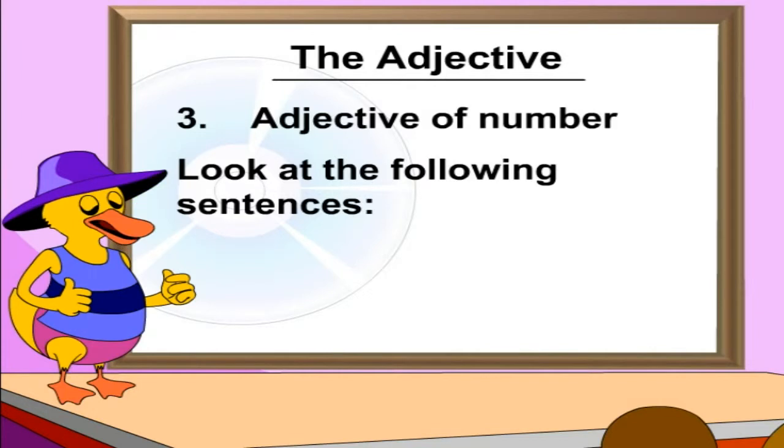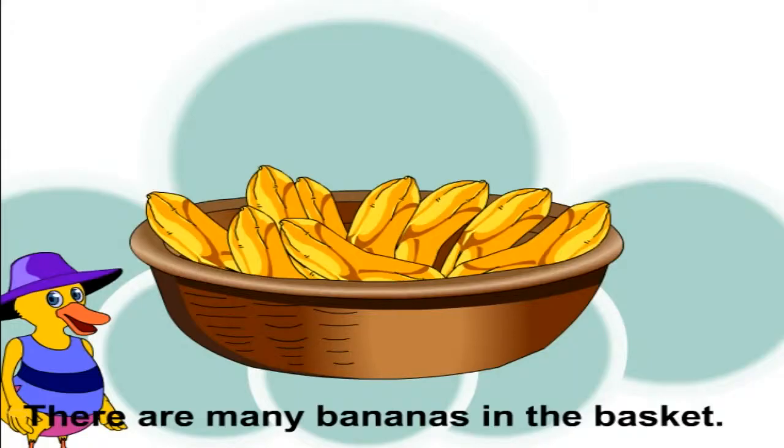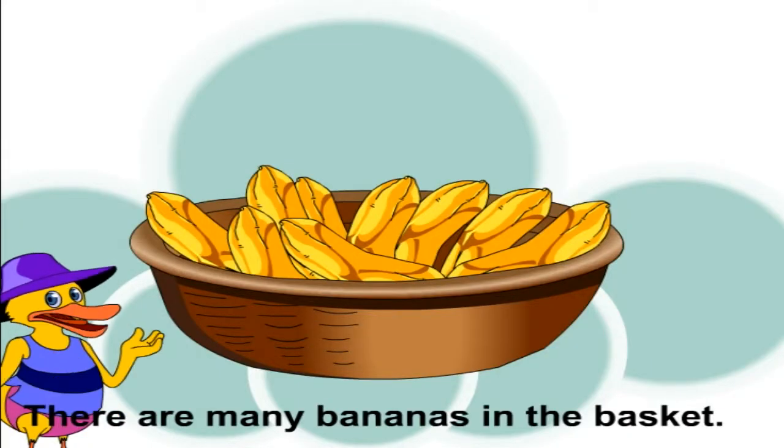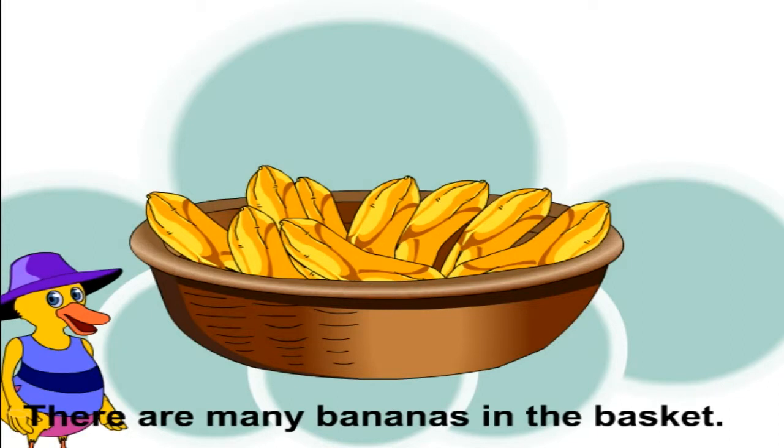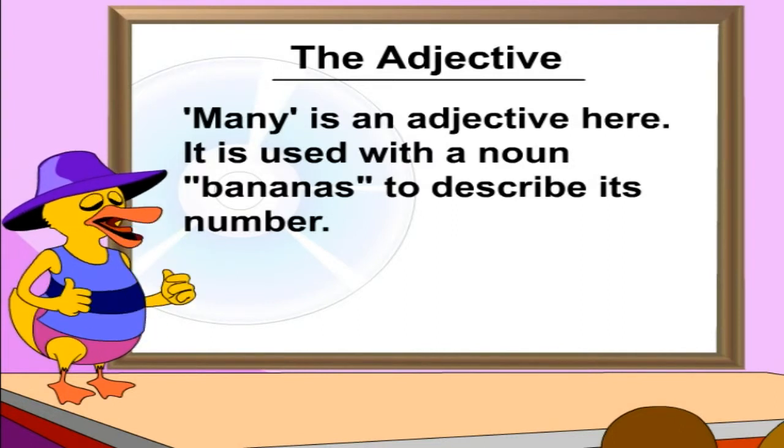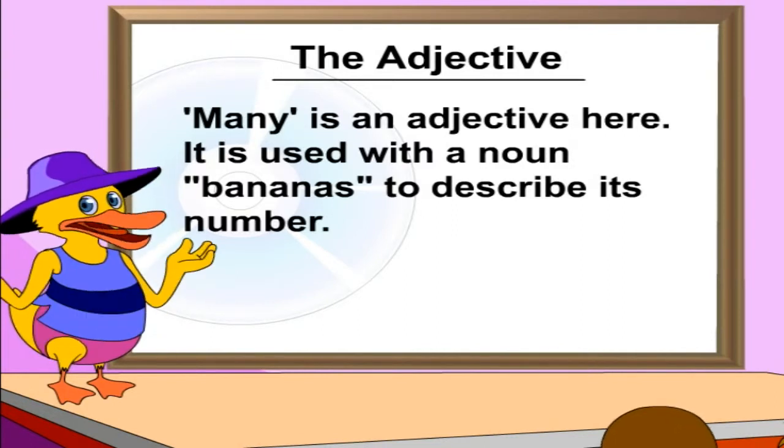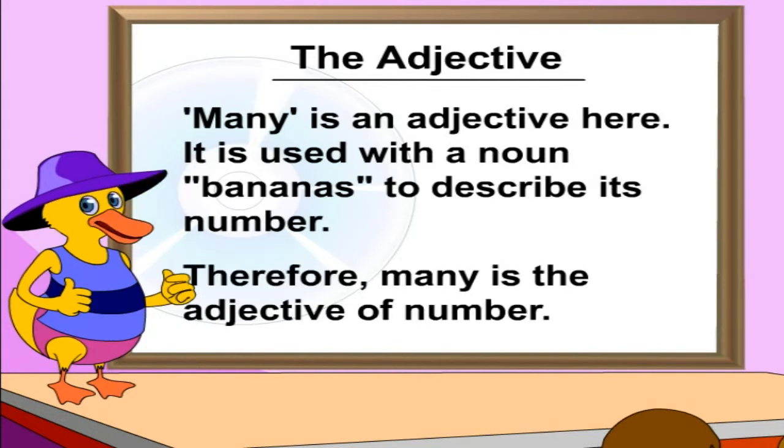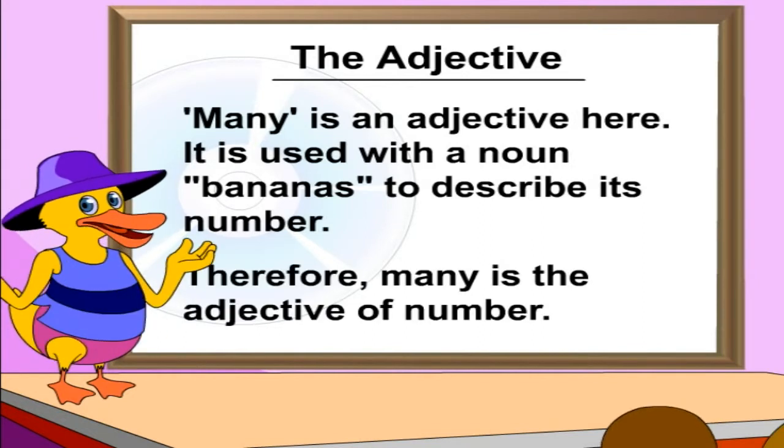Look at the following sentences. There are many bananas in the basket. Many is an adjective here. It is used with a noun, bananas, to describe its number. Therefore, many is the adjective of number.